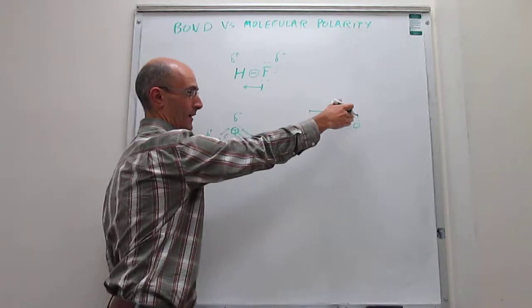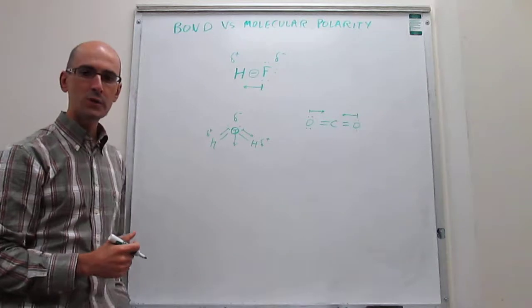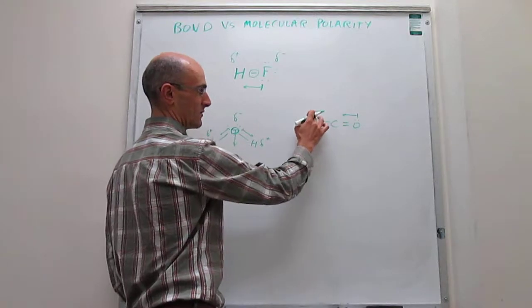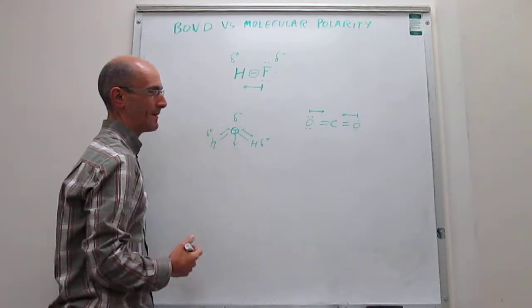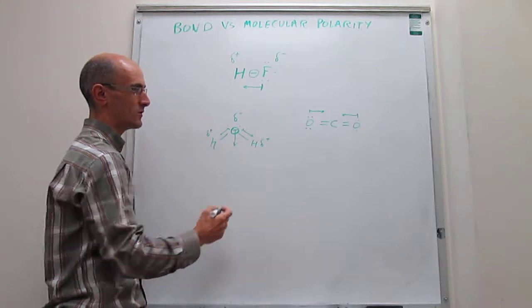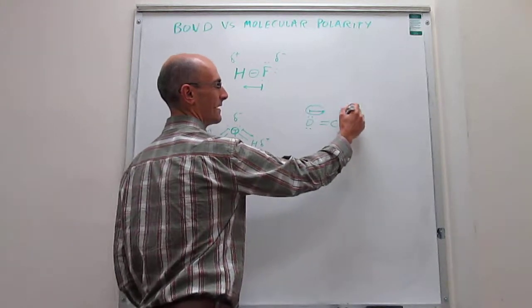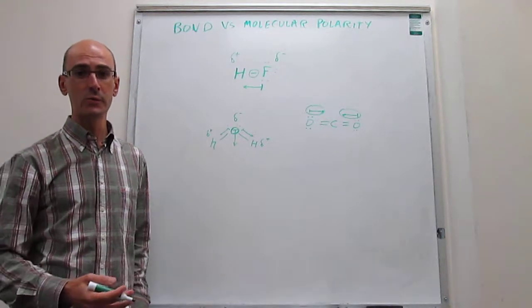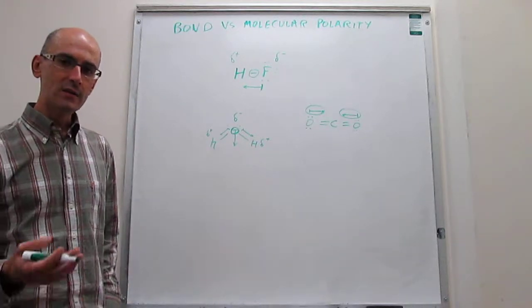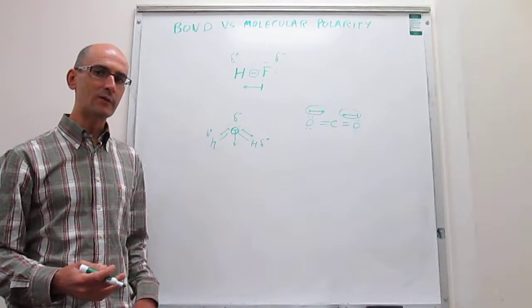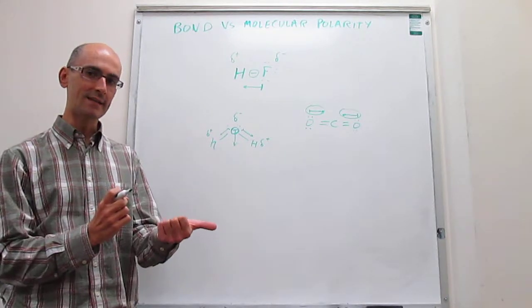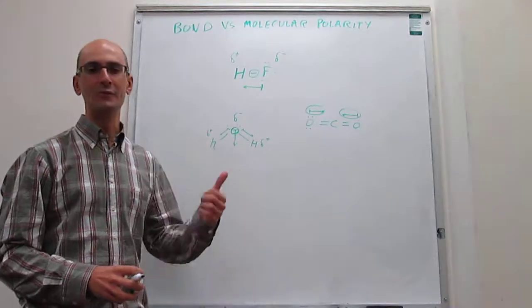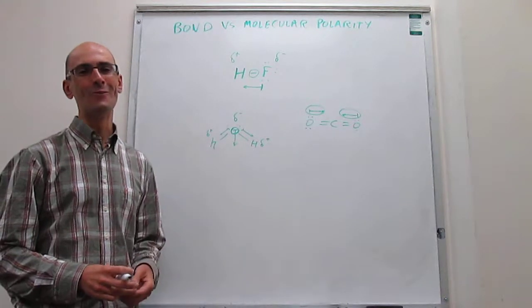We have dipole moments in each of the bonds, but the question is whether they cancel each other out. When you add these two vectors, you will see that there is no overall dipole moment vector for CO2. This dipole moment is exactly cancelled out by that dipole moment, and the CO2 molecule does not have an overall dipole moment. So CO2 is not polar — notice that this is not because the bonds are not polar, but because the dipole moments in the existing bonds cancel each other out due to the shape of the molecule.